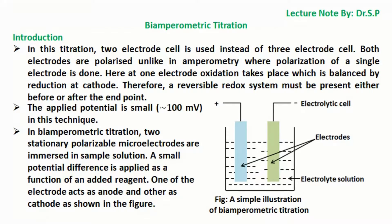In bi-amperometric titration, two stationary polarizable micro-electrodes are immersed in sample solution. A small potential difference is applied as a function of an added reagent. One of the electrodes acts as anode and the other as cathode as shown in the figure.